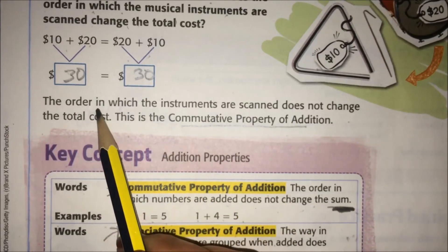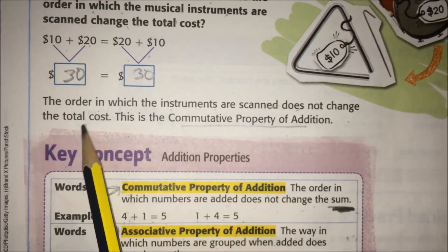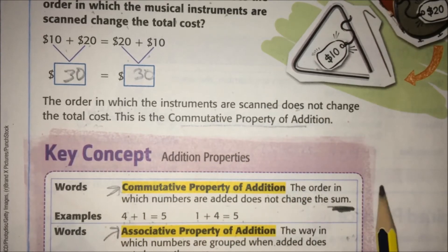That would be the commutative property. The order in which the instruments are scanned does not change the total cost. It does not matter.